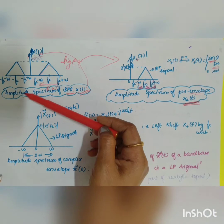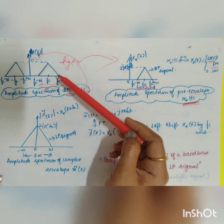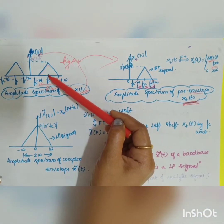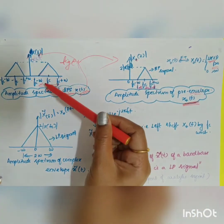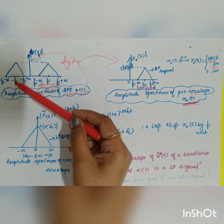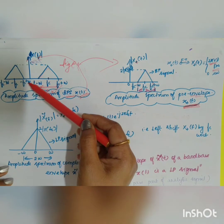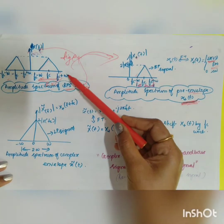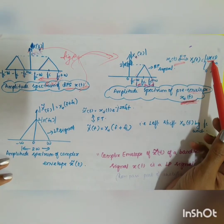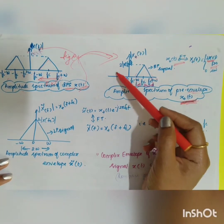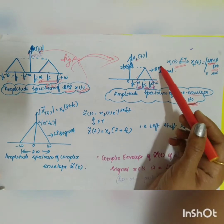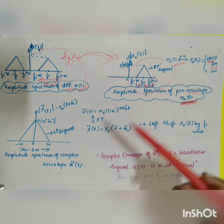The amplitude spectrum of the bandpass signal x(t) has components on both the positive and negative frequency sides, centered at +fc and −fc respectively, each spanning a bandwidth of 2W. The pre-envelope x⁺(t) has spectrum only on the positive frequency side, ranging from fc − W to fc + W, with no negative-frequency component.